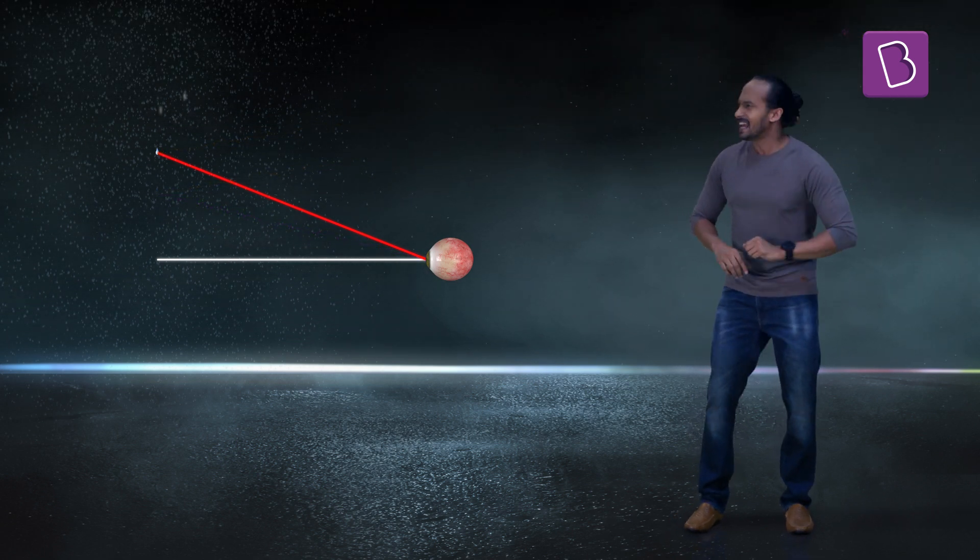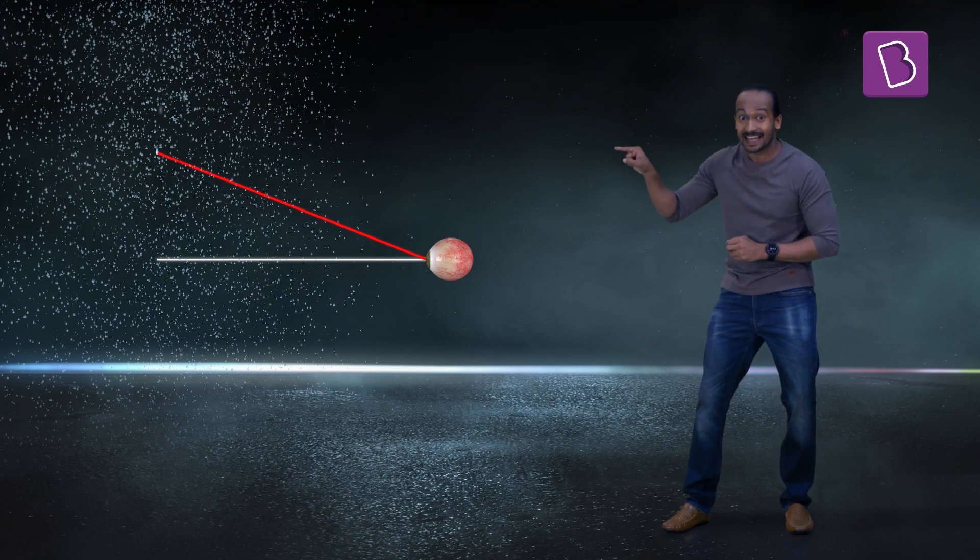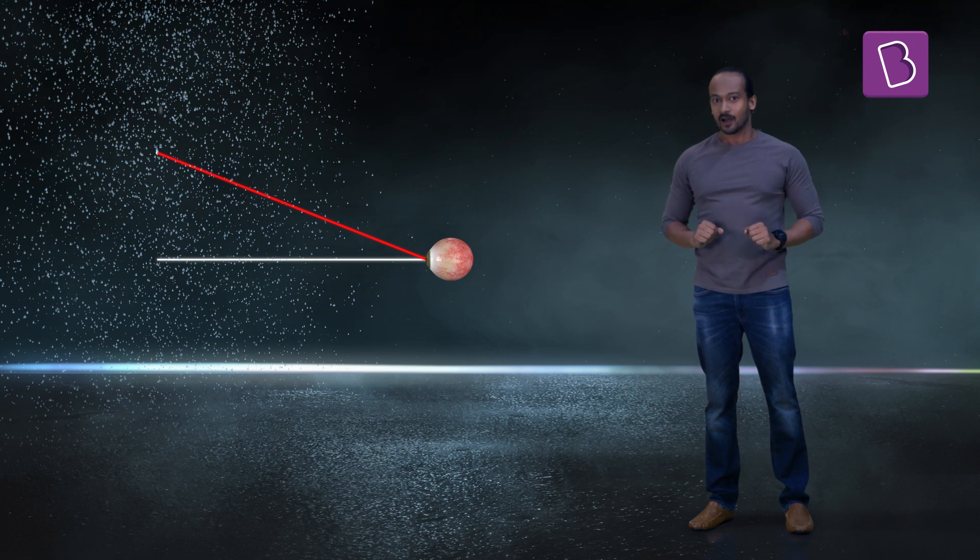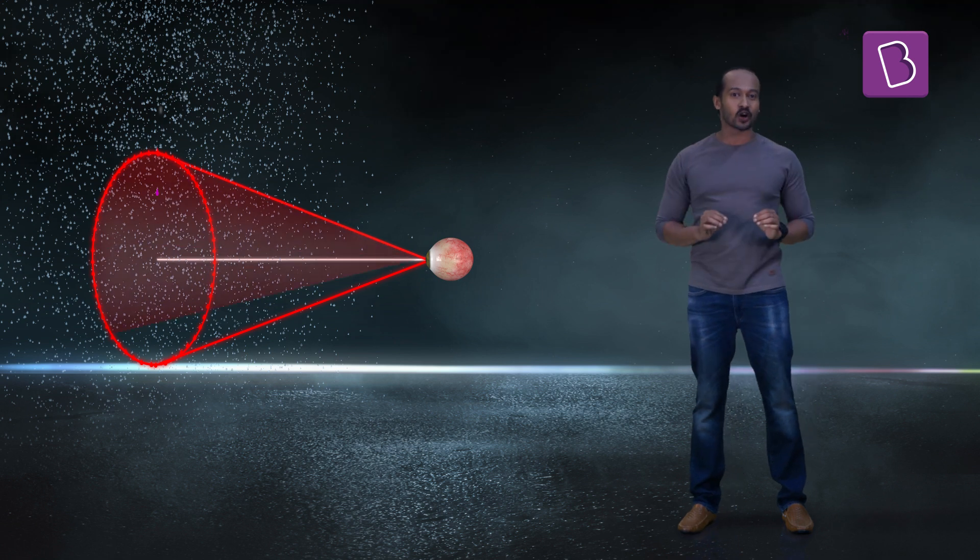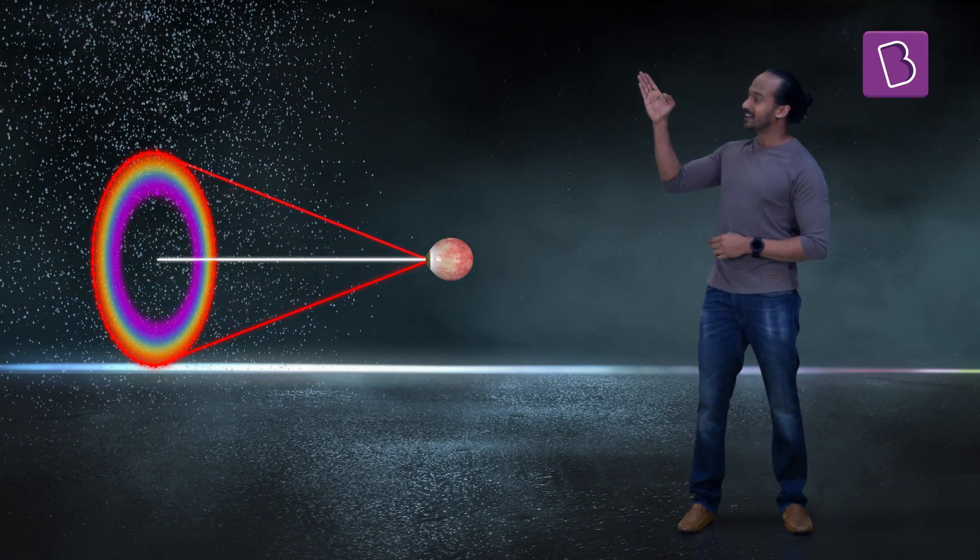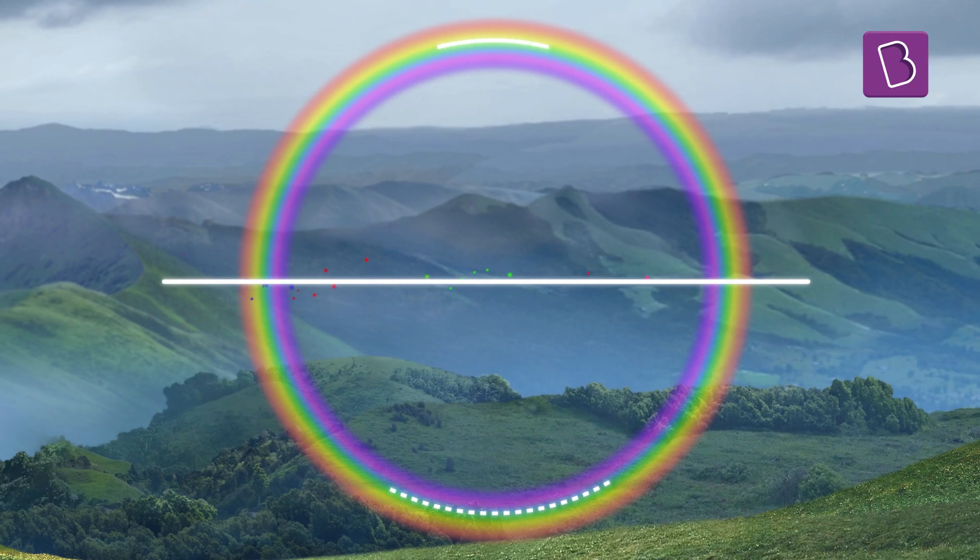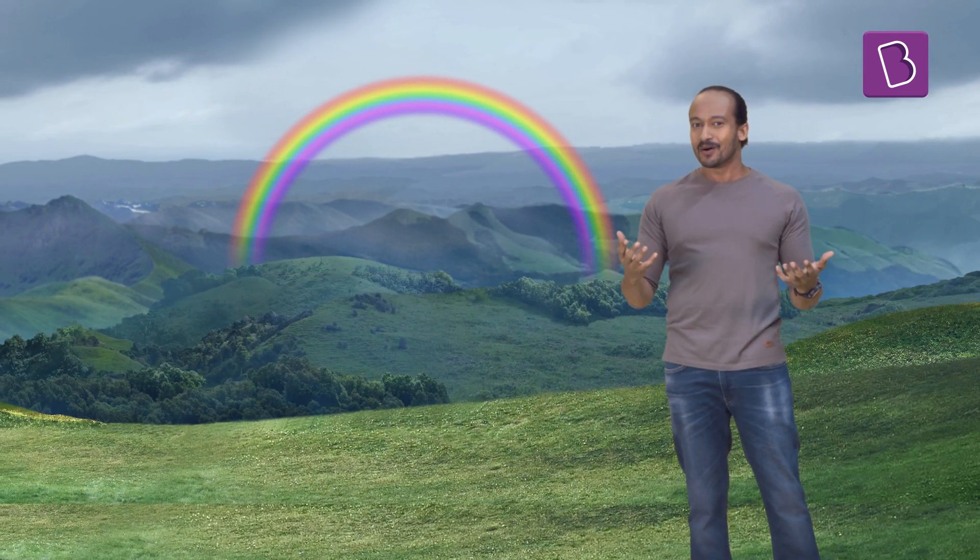And now for the final piece of the puzzle. Let's combine all the droplets that are sending split light. If the angle is fixed, what shape would the droplets form? Yes, a circle. Each of the droplets in this circular rainbow is at 42 degrees, and half of the circle is hidden below the horizon. Overall, this gives the rainbow a bow shape.